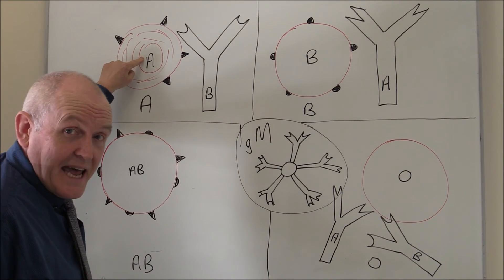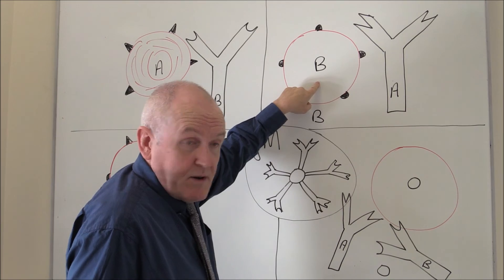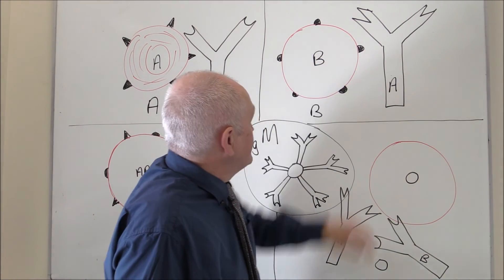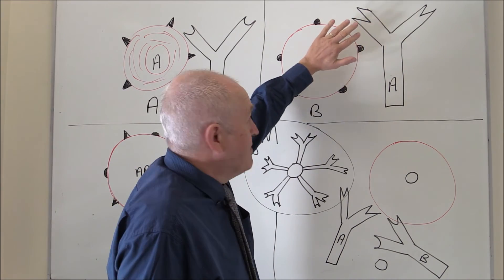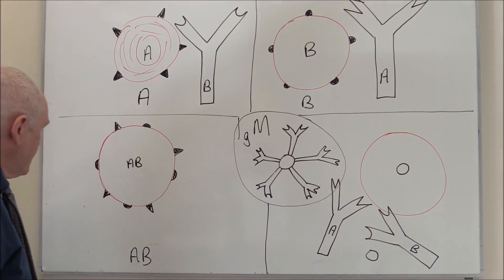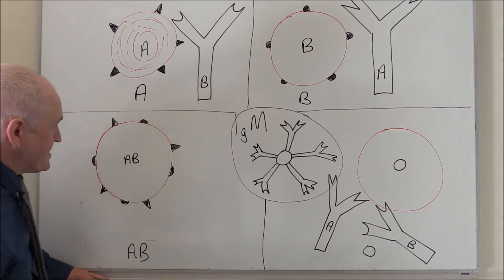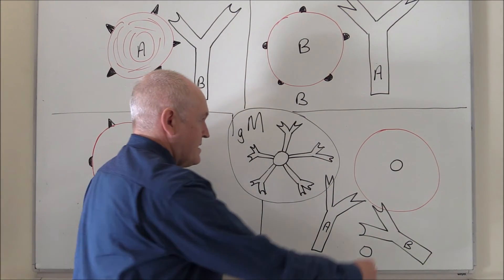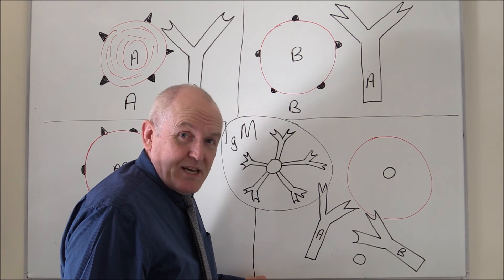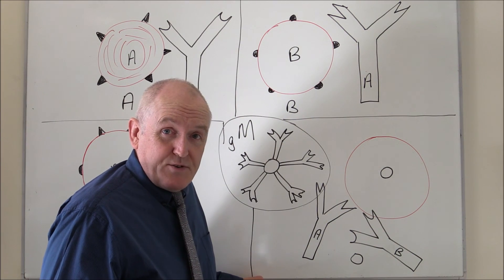So that is what determines the four main blood groups under the ABO system. Group A blood has A antigens on the red cells and anti-B antibodies in the plasma. Group B blood has B antigens on the red cells and anti-A antibodies in the plasma. Group AB blood has A and B antigens on the red cells and no antibodies in the plasma. Group O blood has no antigens on the red cells but both anti-A and anti-B antibodies in the plasma. Now having worked out that information, we can think about what happens during a blood transfusion.